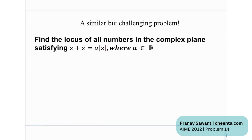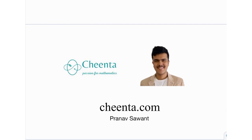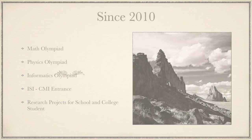At the end, here's a similar but challenging problem: find the locus of all numbers in the complex plane satisfying z + z̄ = A·|z|, where A is a real number. Try this out, and if you're able to do it, let me know. Until then, I'll see you in the next video. Thank you very much, and bye bye.